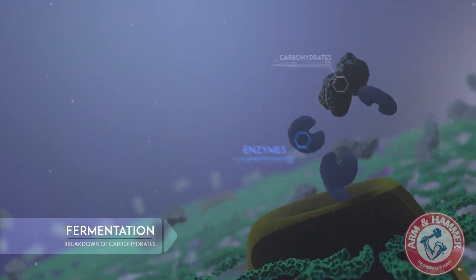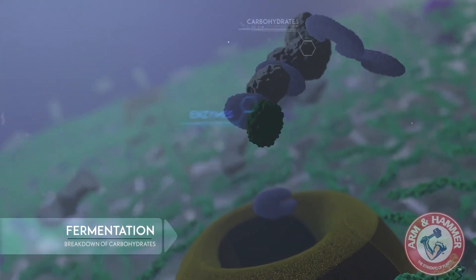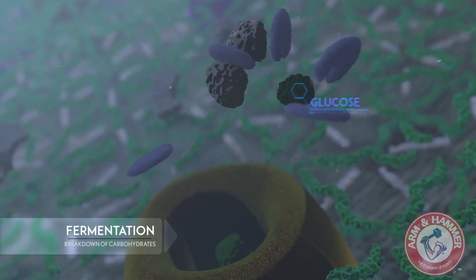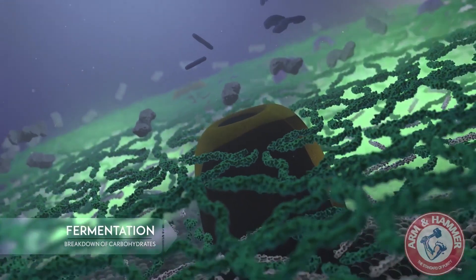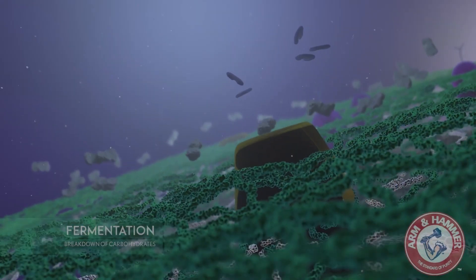During fermentation, yeast cells break down carbohydrates into simple sugars like glucose. Glucose is absorbed by the yeast cell as fuel for reproduction and other metabolic requirements.